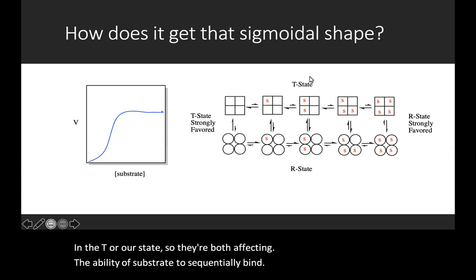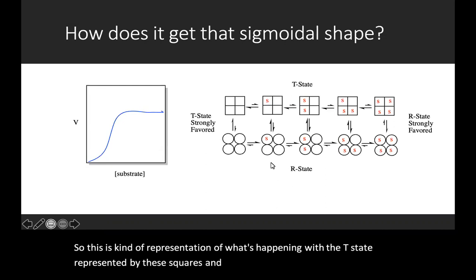This is kind of a representation of what's happening. We have the T state represented by these squares and the R state or relaxed state is these circles. And as we bind more and more substrate, we'll notice that the equilibrium between them shifts.